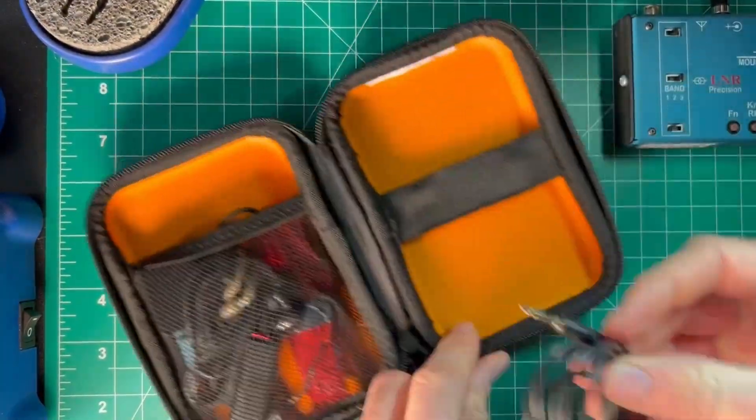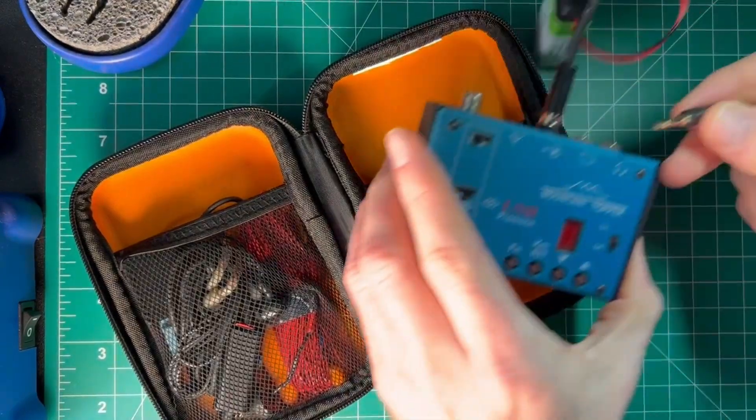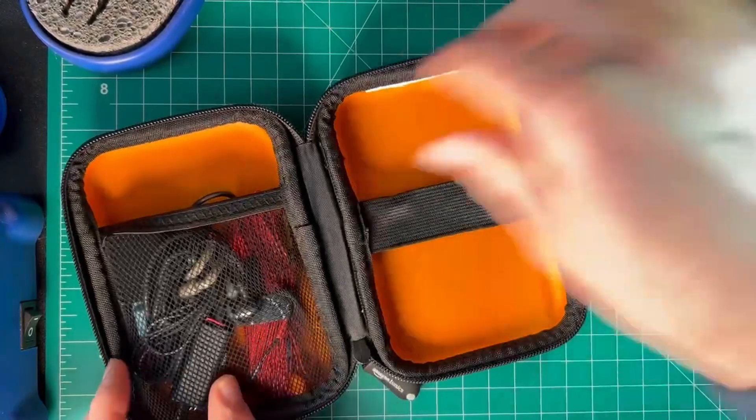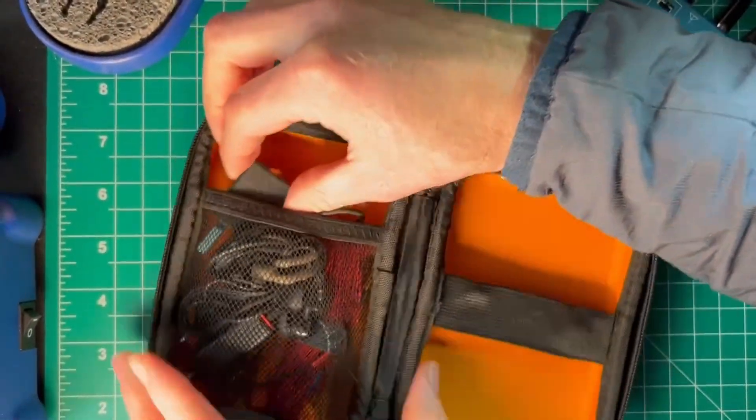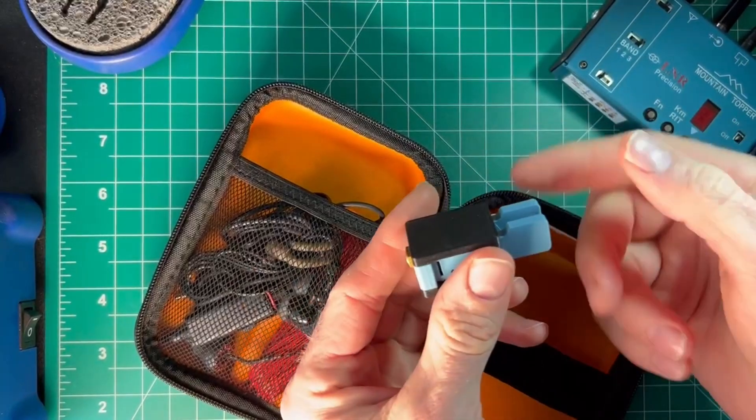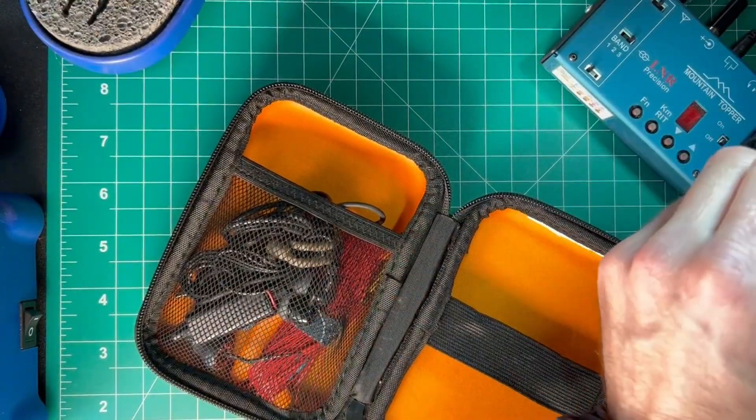I have the cable for my Morse paddle. And then, everything else is wedged into here. So, we have a K6ARK 3D printed paddle.